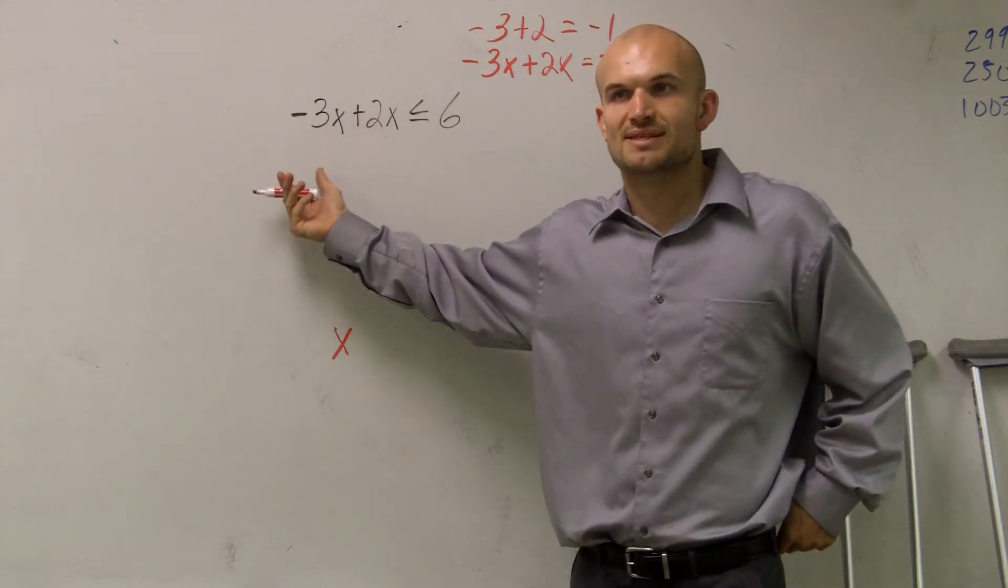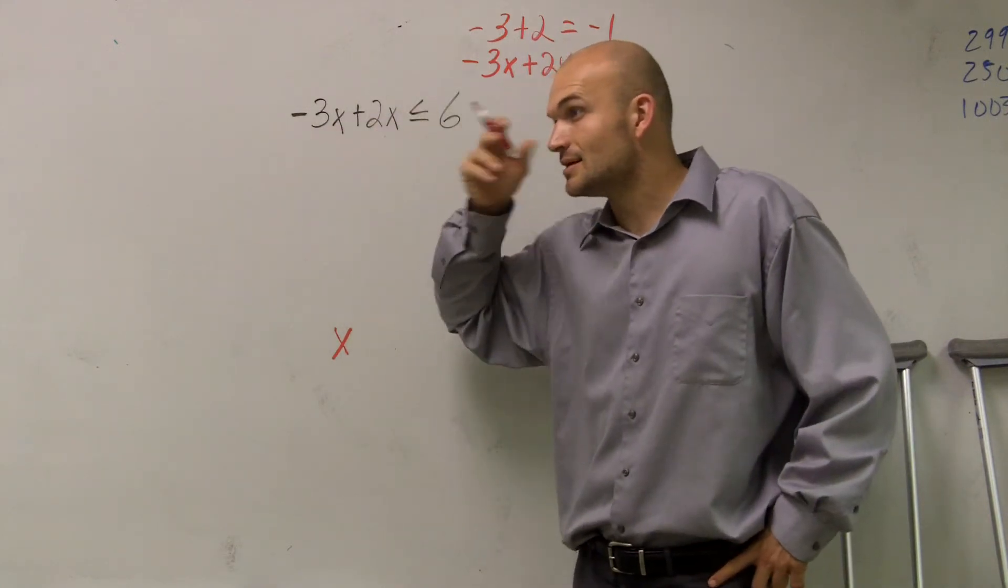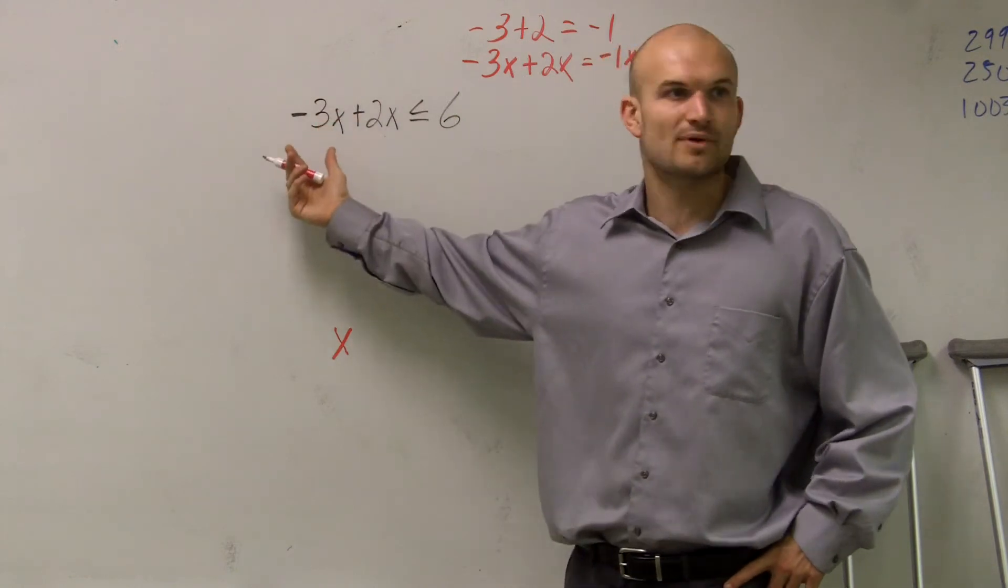Remember, these are like your grouping terms. Think of this as negative 3 times x. You cannot separate that multiplication.